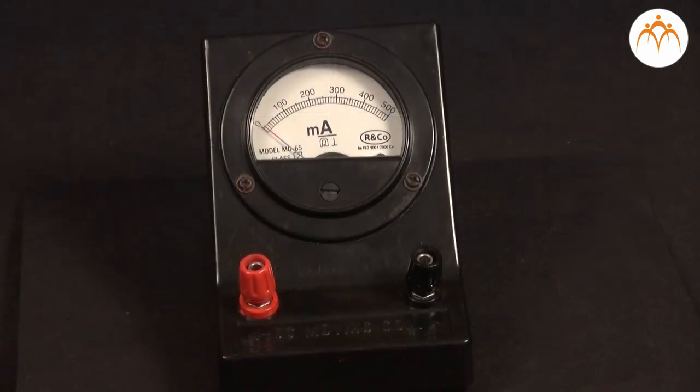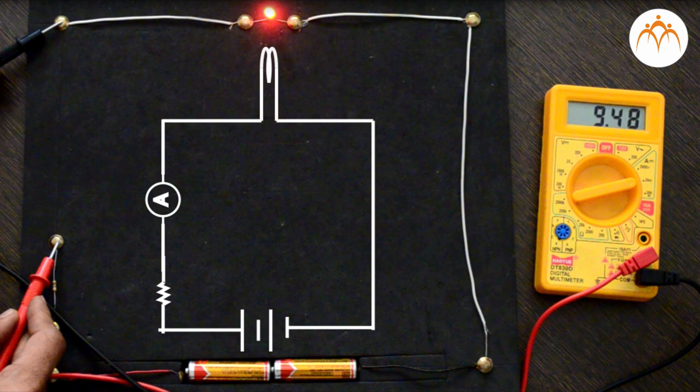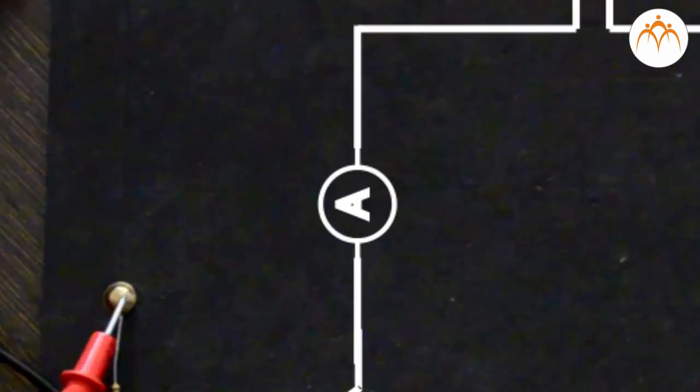Ammeter is an instrument which measures the current flowing through any two points of an electrical circuit. Ammeter in a circuit diagram is represented by the letter A in a circle and is connected in series in the circuit.